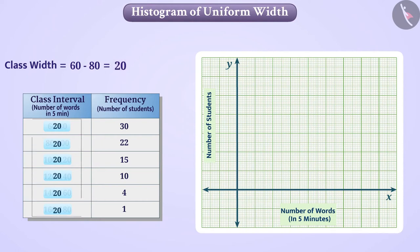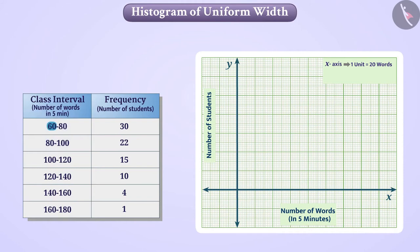Therefore, we will take the scale 1 unit is equal to 20 words on the x-axis. Class intervals begin at 60 and end at 180. Since the first class interval is starting from 60 here, we do not have to show numbers from 0 to 60 on the x-axis. To show that we are not taking the numbers from 0 to 60, we will draw a kink symbol on the x-axis in this way. Thus, keeping in mind the scale on the x-axis, we will show numbers from 60 to 180.